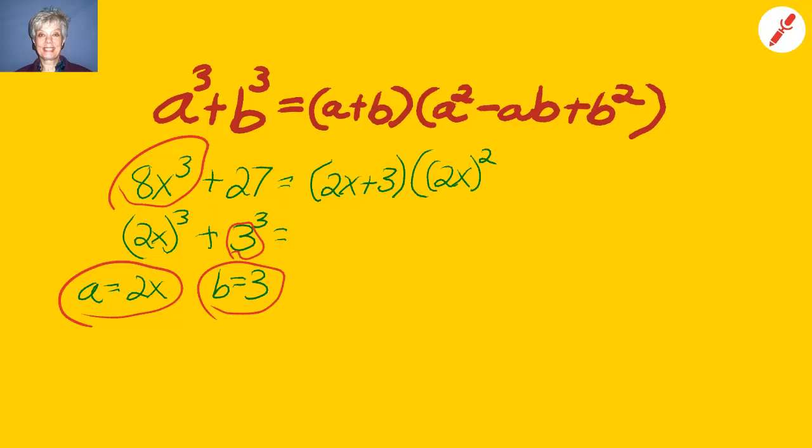And here's how you do it. We have 2x plus 3, parentheses 2x quantity squared, minus 2x times 3, plus 3 squared. Now, work that out. You'll have 2x plus 3 times 4x squared, minus 6x, plus 9. There you go. Piece of cake, right? Well, no, it's not. I know it's hard. It's going to be hard to remember.